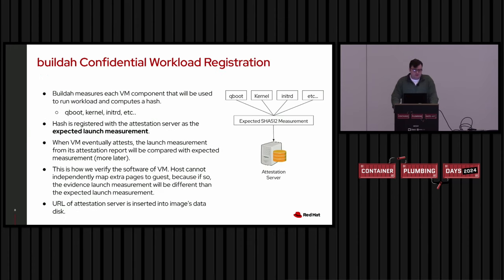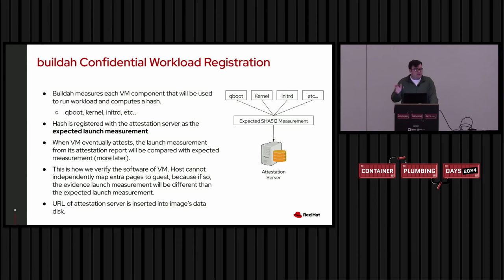For registration with attestation servers, BuildAH measures each VM component that will be used to run the workload — right now we measure QBoot, the kernel, the initrd, etc. — and computes an expected measurement. When the VM goes to attest, it compares its actual launch measurement from the attestation report with that expected launch measurement. If they don't match, it means either not all pages were encrypted or extra pages were mapped unencrypted — both unacceptable — so attestation fails. The attestation server URL is also inserted into the data disk.